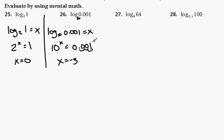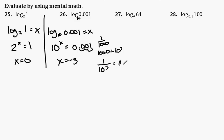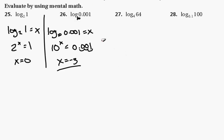Think of this: 0.001 is 1/1000. 1 over 1,000 — and 1,000 is equal to 10 to the third. So this is like 1 over 10 to the third, which is equal to 10 to the minus 3. Therefore, x is equal to negative 3.